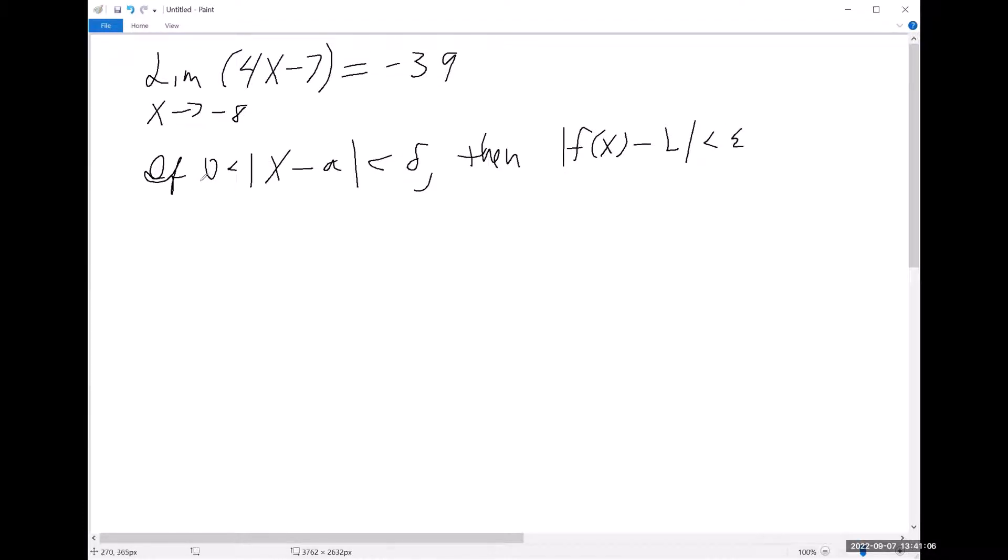And so when we set out to actually write this proof, even though that's not directly what they're asking us to do, we would start with this assumption. So we're going to say assume that x minus a, now a in this case is minus 8, is less than delta. And then we'd be able to make some other connections to arrive at this final expression. That's what we're trying to prove.